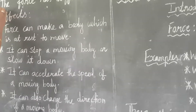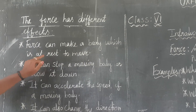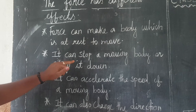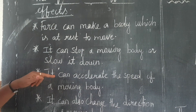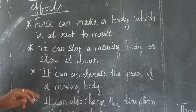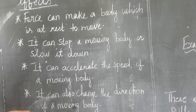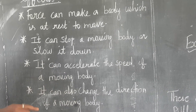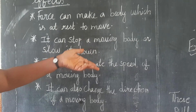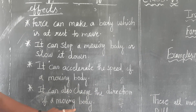The force has different effects. First, a force can make a body which is at rest to move — when any object is at rest, we apply some force and it moves. Second, it can stop a moving body or slow it down — when you are kicking a ball and someone tries to catch it, they apply force to stop it. Third, it can accelerate the speed of a moving body. Fourth, it can also change the direction of the moving body — when you kick the ball, it moves from one place to another, changing direction.